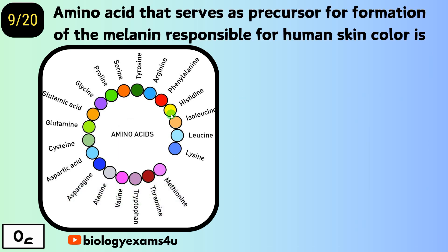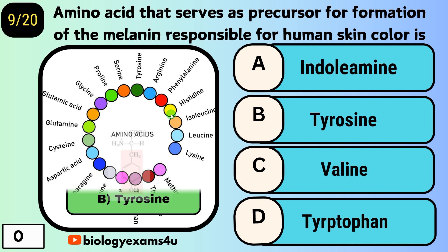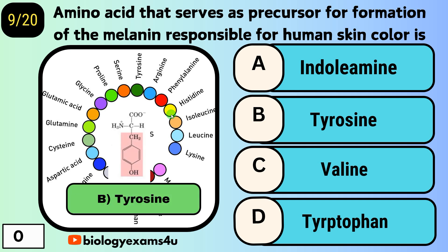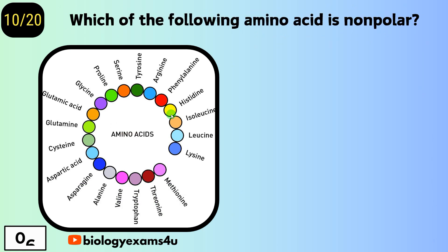Question number nine: the amino acid that serves as a precursor for formation of the melanin pigment responsible for human skin color is — option A, indoleamine; option B, tyrosine; option C, valine; option D, tryptophan. The answer is tyrosine, which is a precursor of melanin pigment.